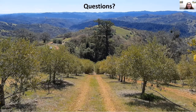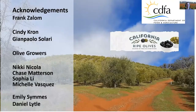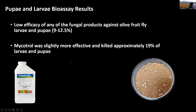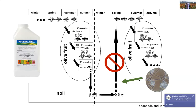First question: do Beauveria bassiana and Metarhizium products have an OMRI endorsement? It depends on the product, so definitely check their labels. Micatrol is certified organic — I can't remember exactly which organic certification it has, but definitely double-check. The Metarhizium product, Met52, is no longer commercially available, and it was not certified organic.